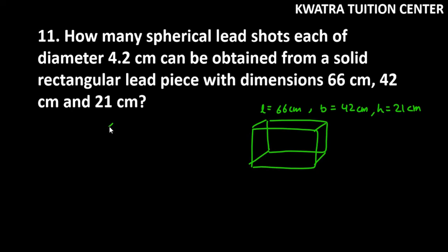Now, for the spherical lead shots, diameter is 4.2 cm, so radius is 2.1 cm. What do we need to find? We need to find n number of spherical shots.